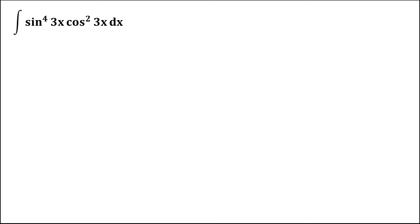Let's solve this problem. We need to find the integral of sine to the power 4 of 3x times cosine squared 3x, dx. First, we rewrite sine to the power 4 of 3x as sine squared 3x times sine squared 3x, then bring down the cosine squared 3x times dx.